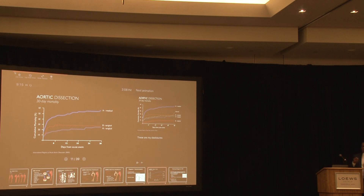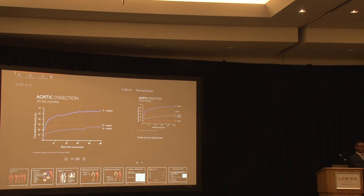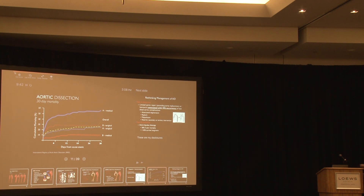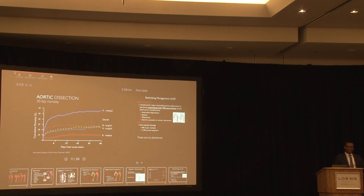For Type B aortic dissection, if you offer open surgery, mortality based on IRAD is around 30%. But if you treat with medications alone, mortality is about 10%. So open surgery actually carries higher mortality in the acute setting. Therefore, many advocated that unless a Type B patient has malperfusion — dying bowel, aortic rupture, or leaking — surgery shouldn't be performed. Things changed, though, as people started rethinking this approach.